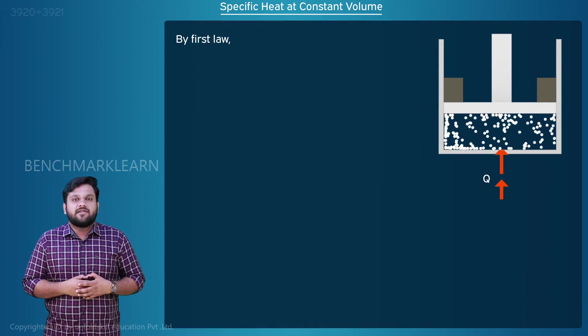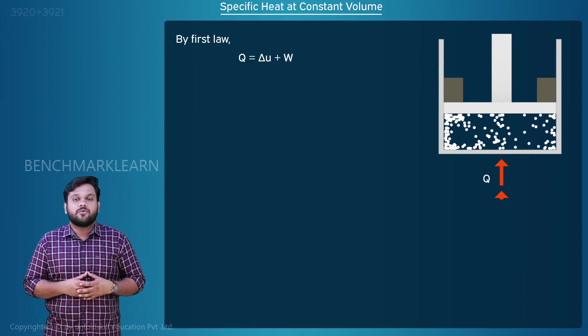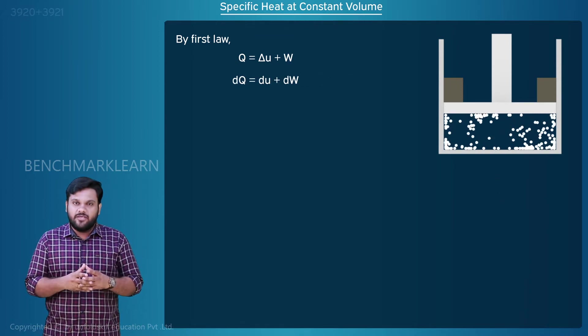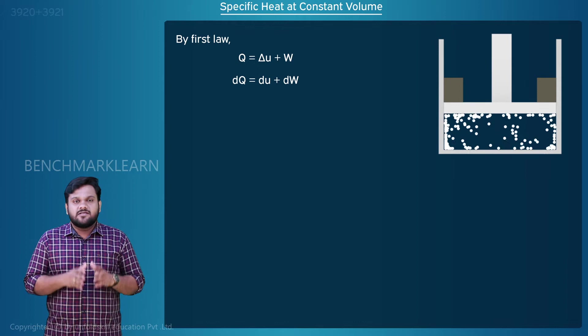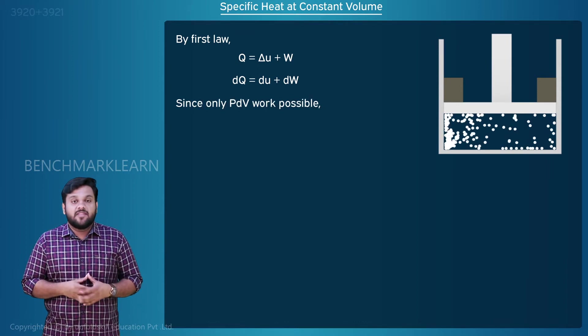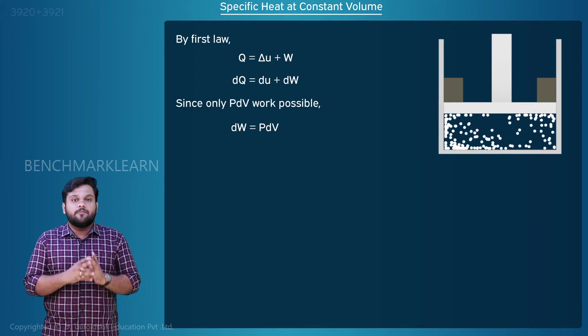The first law can be written as Q is equal to delta U plus W, or dQ is equal to du plus dW. Since only PdV work is possible, dW is equal to PdV.